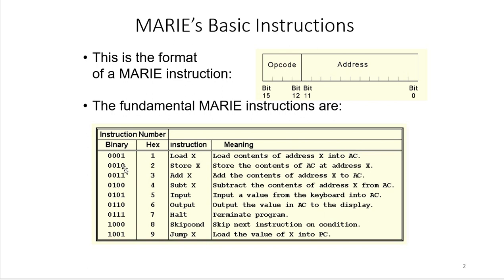The second instruction is STORE, which is binary 0010 — hexadecimal 2. It stores the value of the AC to address X. Hexadecimal 3 is ADD X, which adds the value at address X to the AC and stores the result back to the AC. Hexadecimal 4 is SUBTRACT X, which subtracts the value of X from the AC and stores the result back to the AC.